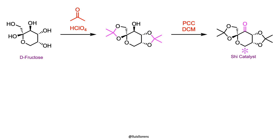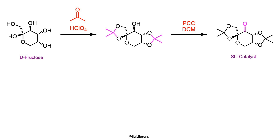This ketone can be synthesized in two steps from the very cheap chiral starting material D-fructose, by acetalisation and oxidation of the remaining alcohol with pyridinium chlorochromate. In this catalyst, the stereocenters are close to the reacting center, so the stereochemical communication between the substrate and the catalyst is efficient.